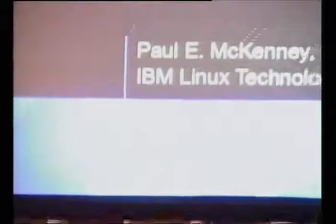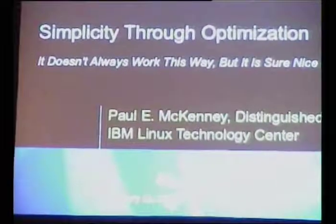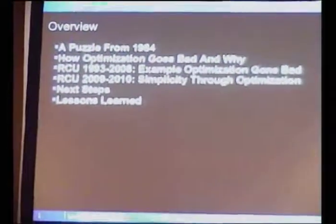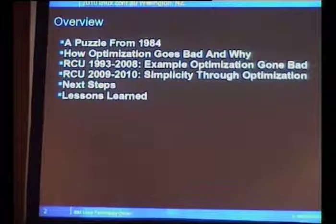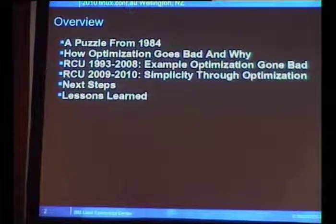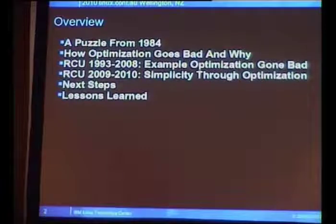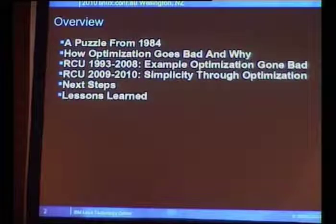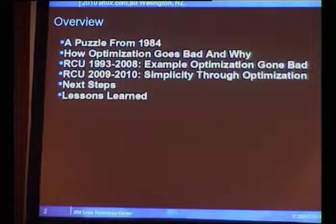Thank you, Evan. This is sort of an exception, but we always like to report on exceptions. It doesn't always work this way, but this time it did. I'm going to go through first a puzzle from 1984. We'll look at why optimization tends to go bad, and then we'll look at two phases of RCU's evolution: the going bad phase for about 15 years, and then some redemption over the past year. Finally, next steps for RCU and some lessons learned.